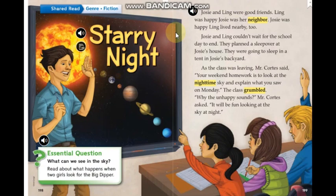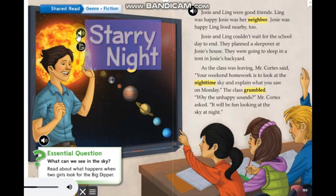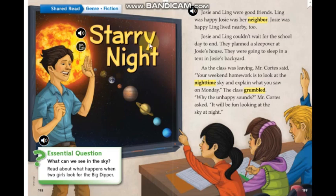Here we go. Before reading, the genre of the story is fiction — fiction has made-up characters and events. I'm going to give you some time, smart readers, to read the title. Remember, we should read the title before reading any story. Listen carefully to the title: genre — fiction. The title is 'Starry Night.' Later on we'll find out how the title is related to the story we're studying.